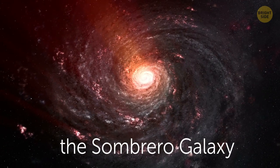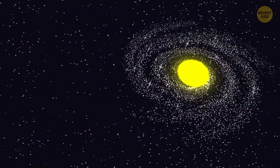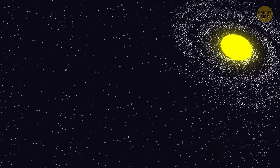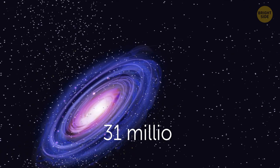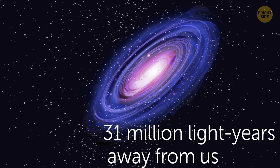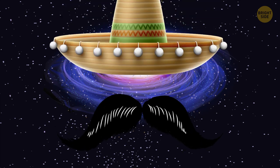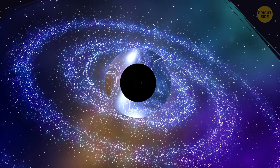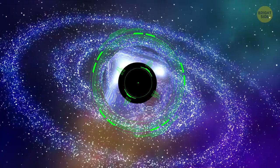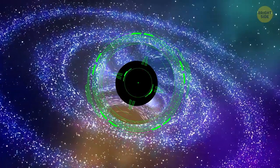It's not hard to guess why. This lenticular galaxy from the constellation of Virgo is 31 million light-years away from us, and it's only 30% the size of the Milky Way. It has a huge bulge right in the center of it. This bulge is formed by the effect of a supermassive black hole located in the nucleus of the galaxy.